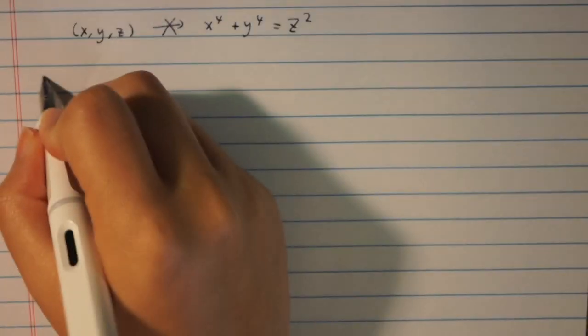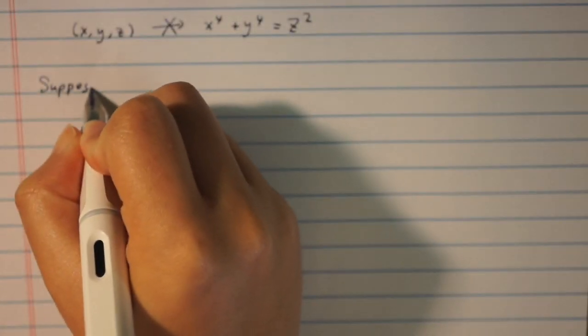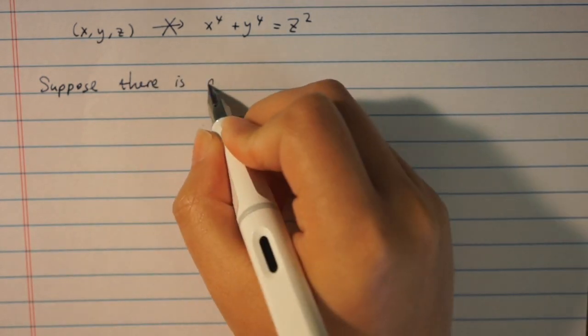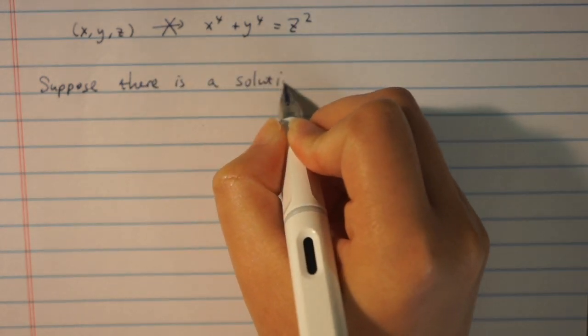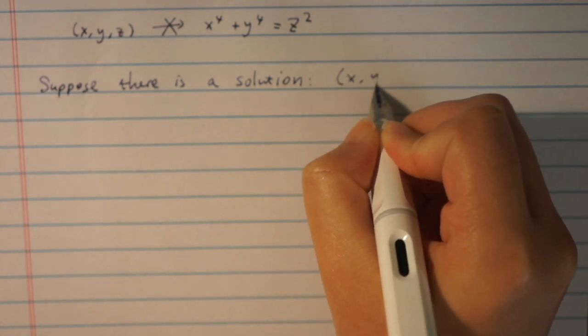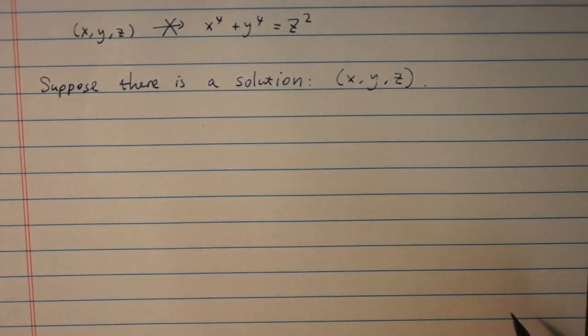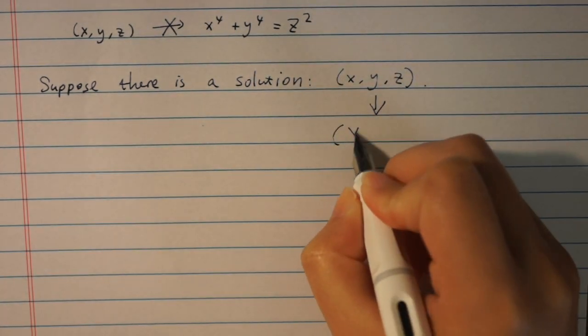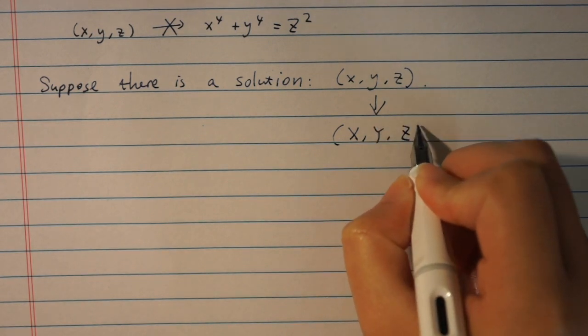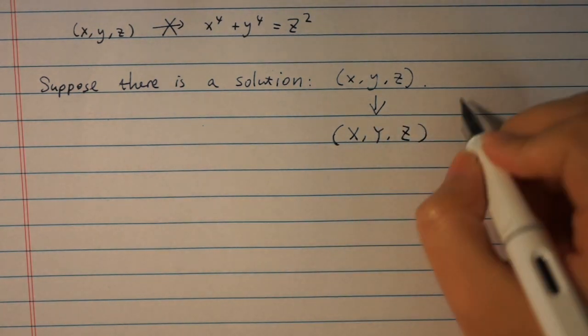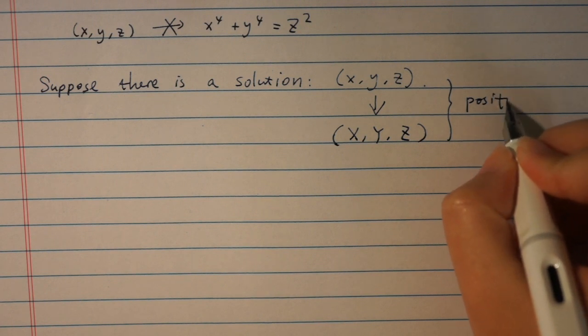The general idea here is to suppose that there is a solution x, y, z in positive integers to the equation and we use this supposed solution to produce a new solution capitalized X, Y, Z in positive integers with capitalized Z smaller than little z.